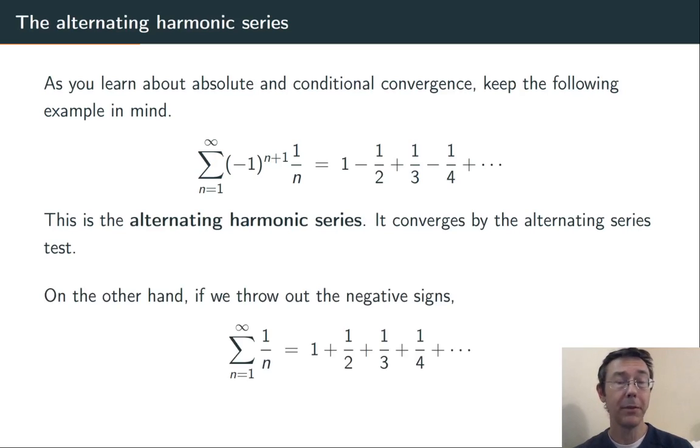However, if you throw out the pluses and minuses, and just look at 1 plus 1 half plus 1 third plus 1 quarter and so on, you get a divergent series, the harmonic series. So here we have a situation where the series converges, but really only because of the pluses and minuses between the terms.